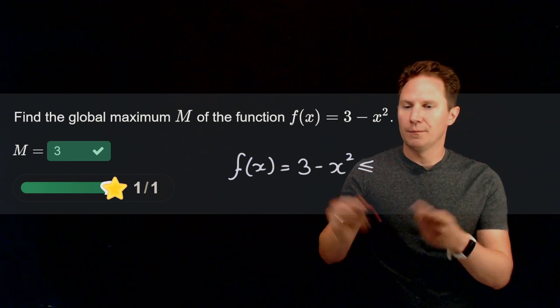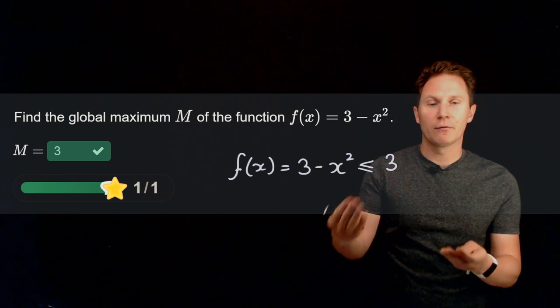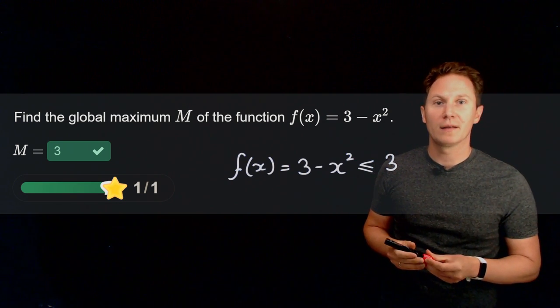So if we want to give it an upper bound it would be 3. It's never greater than 3 and indeed at x equals 0 it attains this global maximum that is 3. Let's look at the next question.